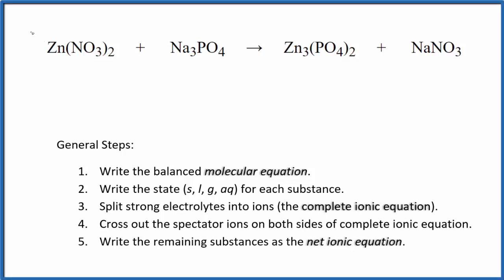Let's write the balanced net ionic equation for zinc nitrate plus sodium phosphate. The first thing we do with net ionic equations is balance the molecular equation. I have three zincs here and just one, so I'm going to put a three here. Now the zincs are balanced.